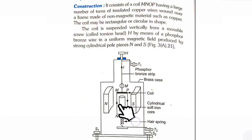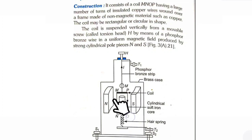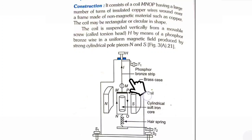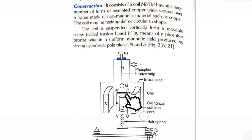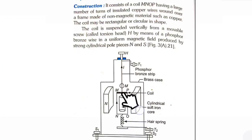When the current flows in the galvanometer, one terminal is T1 and the other terminal is T2. The current flows in through one terminal and emerges out the other. When the current flows in the coil, since a current carrying coil placed in a magnetic field experiences a torque, that torque rotates the coil. This is about the construction of a moving coil galvanometer.